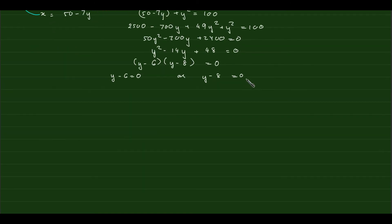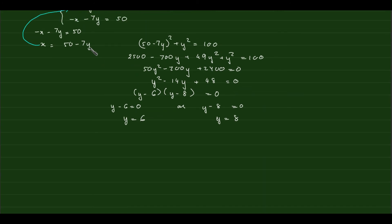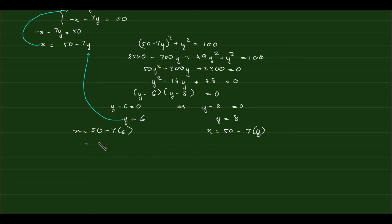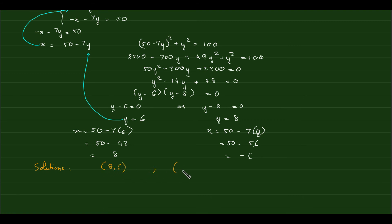By the zero product property, y = 6 or y = 8. Plugging back into x = 50 – 7y: for y = 6, x = 50 – 42 = 8; for y = 8, x = 50 – 56 = –6. So the two solutions are (8, 6) and (–6, 8).